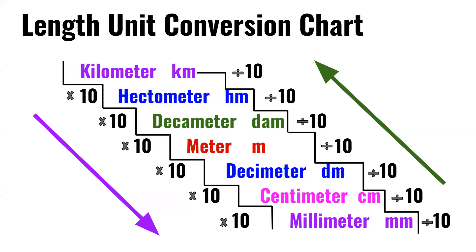So if you want to go from a larger unit of measure to a smaller unit of measure, you multiply. And if you want to go from a smaller unit of measure to a larger unit of measure, you divide.